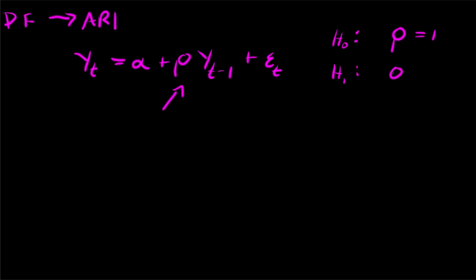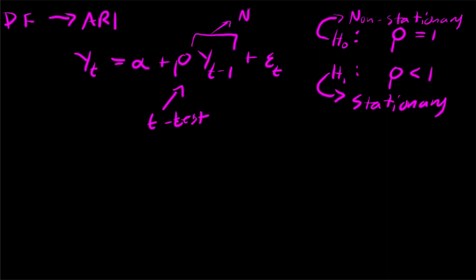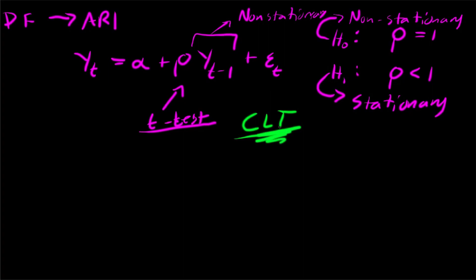Our alternative hypothesis is that rho is going to be less than 1. Rho = 1 indicates non-stationarity. If we reject the null hypothesis and use the alternative, we are saying our data is stationary. To test this, you could use a t-test; however, if y(t-1) as a process is non-stationary, we can no longer do this because a non-stationary process does not follow the central limit theorem.